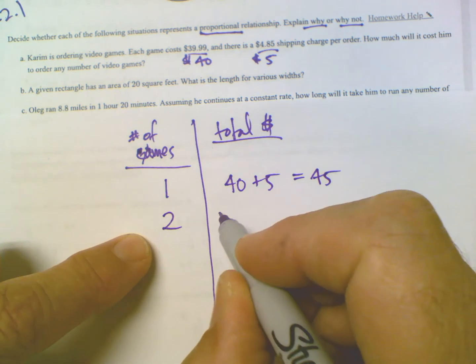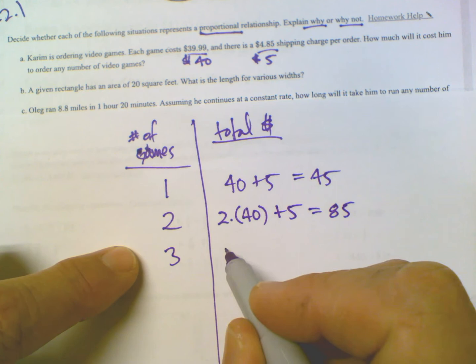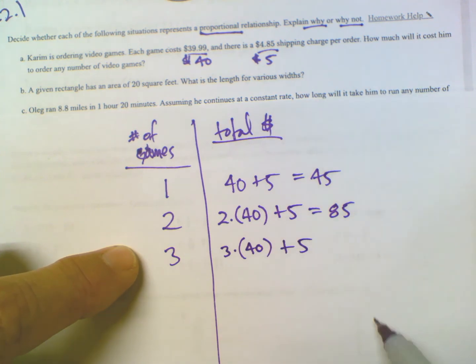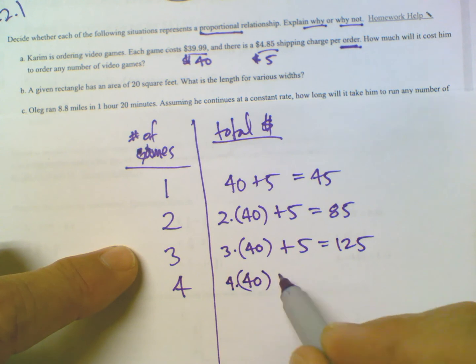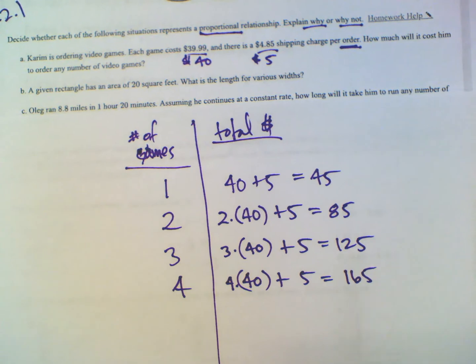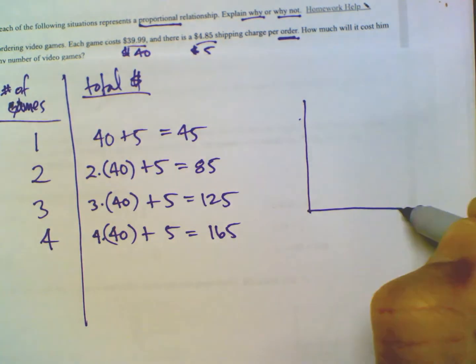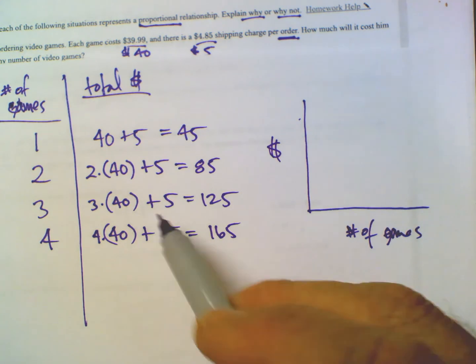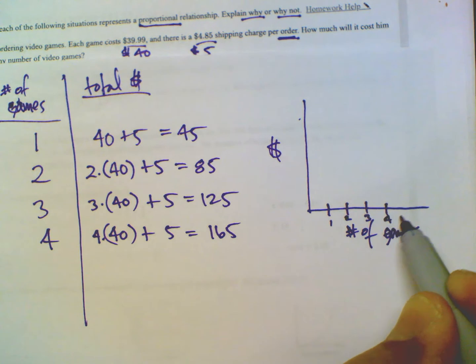If I was going to order two games, it would now be two times $40 plus just a single $5 shipping, so it would be $85. If I was going to order three games, it would be three times the $40 per game plus just the single $5 shipping, so there's a $5 shipping per order. So in this case, it'd be 125. If I was going to order four games, it would be four times the $40 plus a $5 shipping. In this case would be 165. So the question here is, is this proportional? Is it linear? Is it proportional? What does this look like? So if I were going to graph it, I'm going to just do a quick little graph over here and I'm going to have my x-axis be the number of games and my y-axis be the total money. When we think about scale, I can go by ones on my number of games. One, two, three, four, five, and so forth.